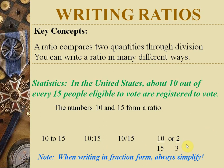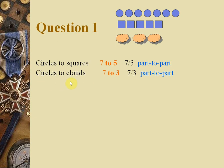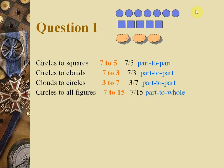Question 1: How many circles to squares? There are 7 circles and 5 squares, so the ratio is 7:5, which is already in simplest form. Circles to clouds: 7 circles and 3 clouds gives a ratio of 7:3. Clouds to circles: the first quantity is clouds (3) and second is circles (7), so the ratio is 3:7.